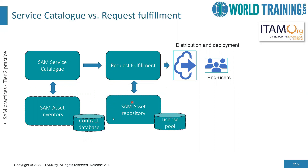If an asset is not available in the repository, then the request fulfillment may not be able to fulfill the request. Therefore, there should be sufficient assets in the asset repository which are enabled for use and reuse, so that the request fulfillment process does not get hindered. This asset repository is the available license pool.